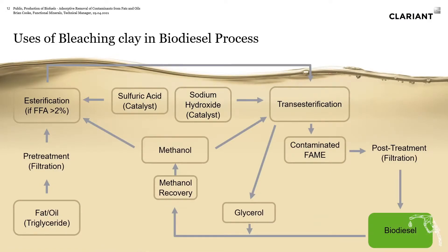Looking closer at the process, you start with the fat or oil that gets reacted with methanol to form biodiesel at the end. But there are a lot of nuances to consider. The first part is the pre-treatment — you want to take your fat and oil and remove as many contaminants as possible. You'll have metals, you may have soap, and you may have some residual free fatty acid that needs to be removed in the pre-treatment process.